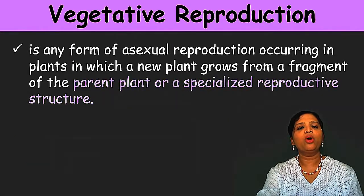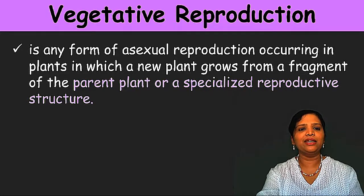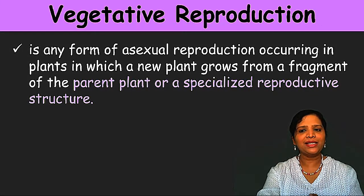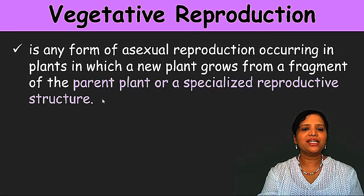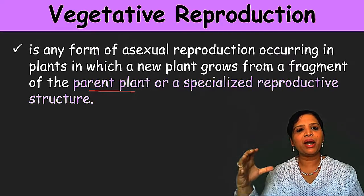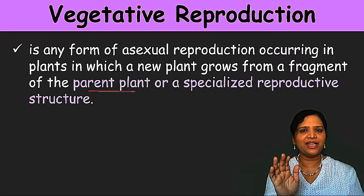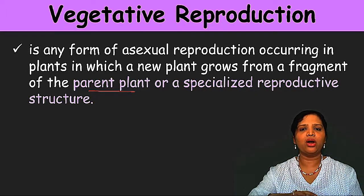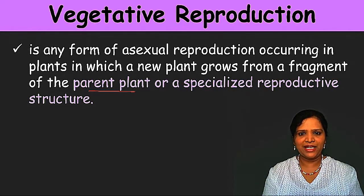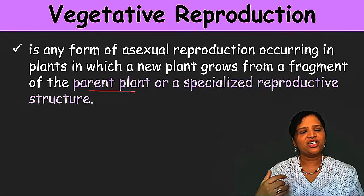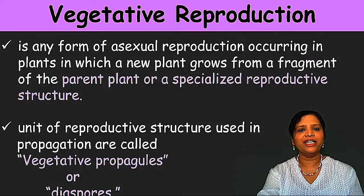Let us see the definition. What is vegetative reproduction? It is a form of asexual reproduction occurring in plants in which a new plant grows from a fragment of the parent plant or a specialized reproductive structure. The new ones grow from the parent or some specialized part of the parent — not the full parent. The modification will be in the stem, or in the roots, or in the leaves. From the modified or specialized reproductive structures a new plant will generate.